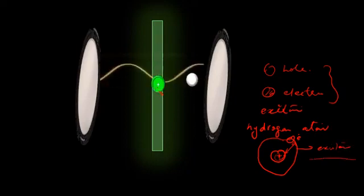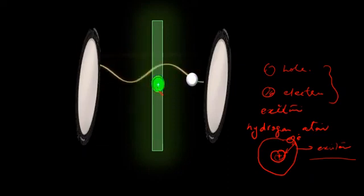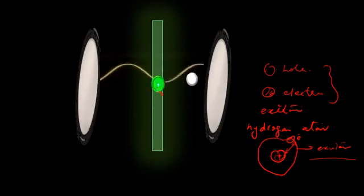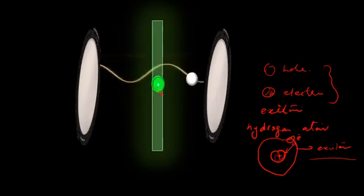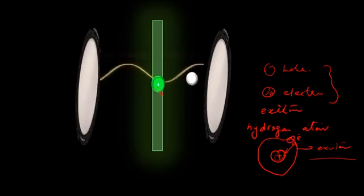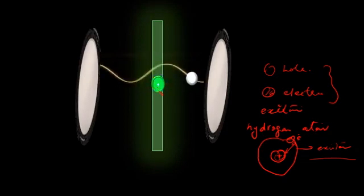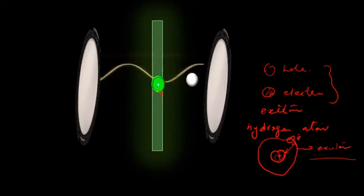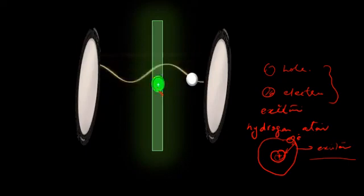Just like a hydrogen atom, here the hole is created when a light wave of the right frequency hits an atom in the quantum well and releases the electron. This electron, although not a free electron, is bound to the atom and revolves around the positively charged hole. At some point it falls back into the hole, releasing light of the same frequency that was used to create the exciton.